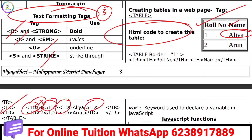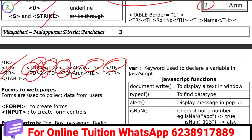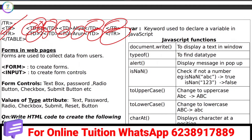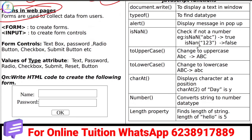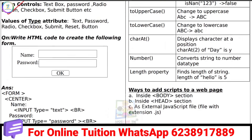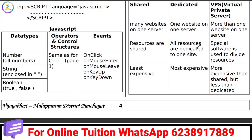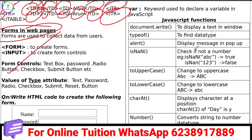We learn about table data using TableData tags. We also learn data collection using form controls. In Chapter 6, we use JavaScript — including JavaScript data types and JavaScript functions.